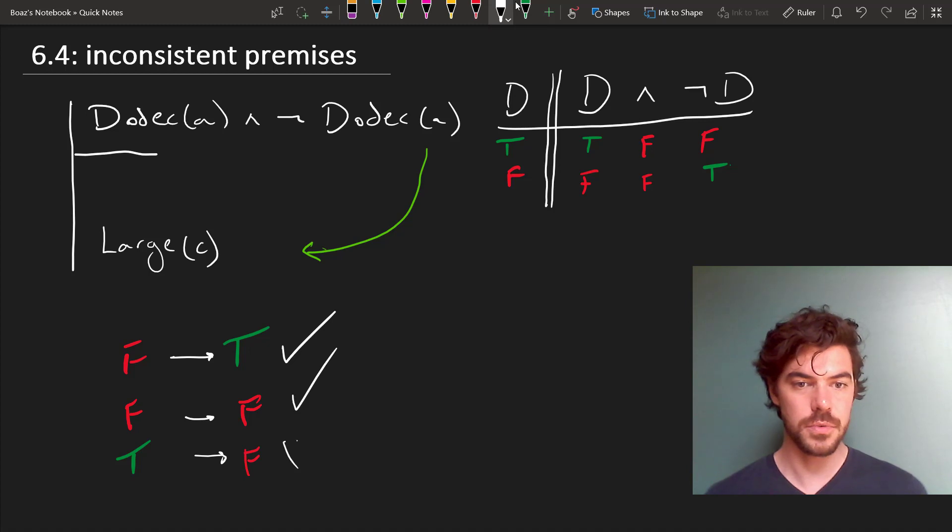And it's impossible to go from true to false when the sentence we're starting out with, our premise itself, is inconsistent and therefore has to be false.